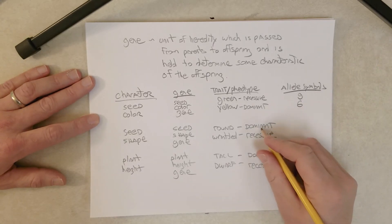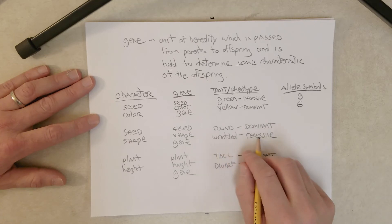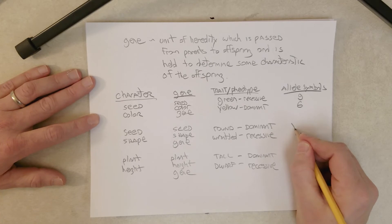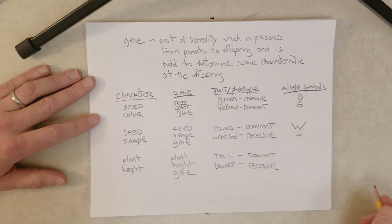Now we can see round is dominant, wrinkled is recessive. So little w for wrinkled, big W for round.